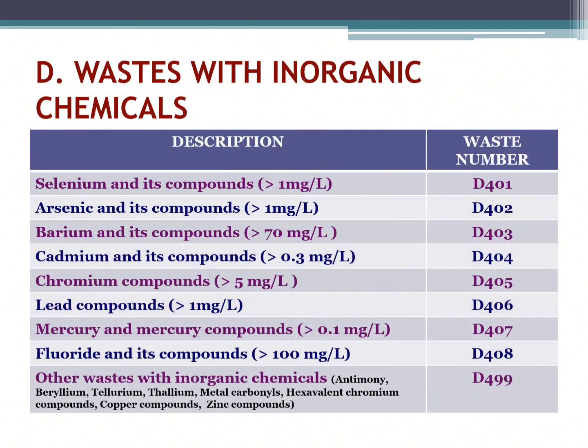Now we're heading to waste with inorganic chemicals. Selenium and its compounds, 1 mg per liter, waste number D401. Arsenic and its compounds, 1 mg per liter, waste number D402. Barium and its compounds, 70 mg per liter, waste number D403. Cadmium and its compounds, 0.3 mg per liter, waste number D404.